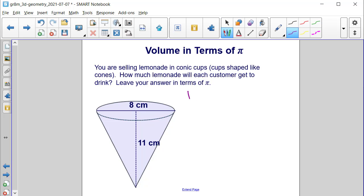This is a cone, and we know that the volume of a cone is equal to 1 third times pi times the radius squared times the height.